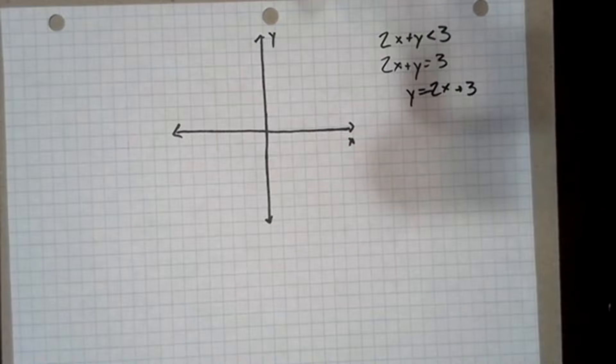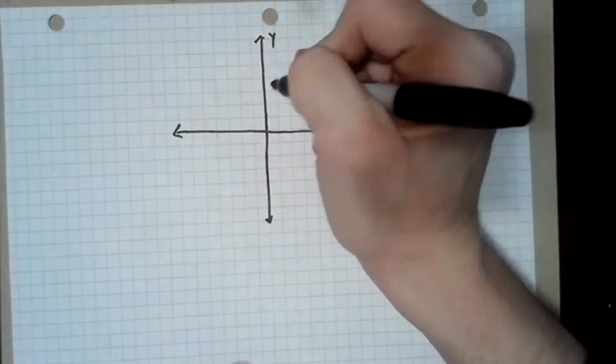We could do this a little differently. We could find the intercepts and plot those and draw the line through them. But I find this a little easier. I'm used to working with the slope intercept form. So using this makes sense to me. You don't have to do it this way.